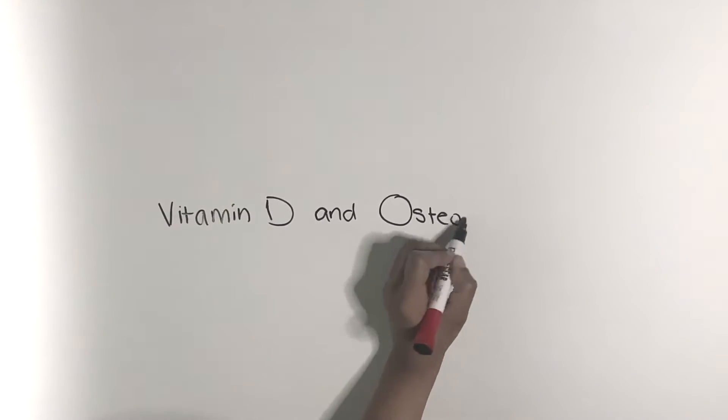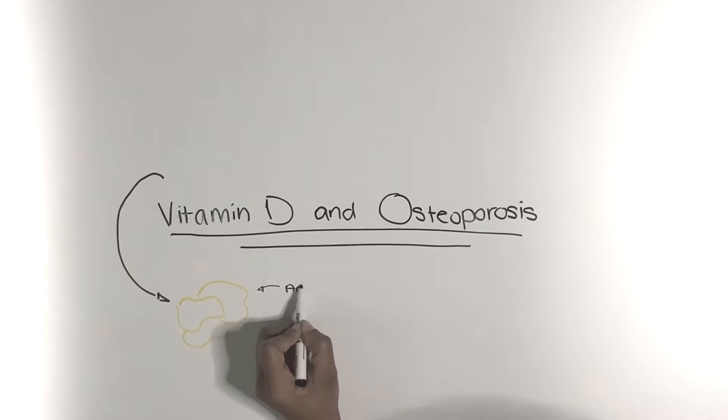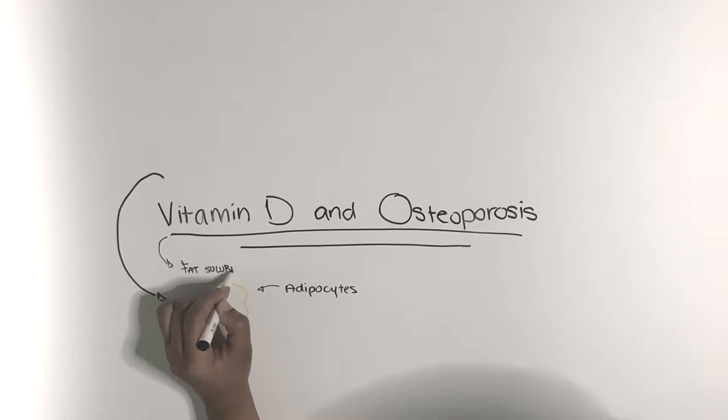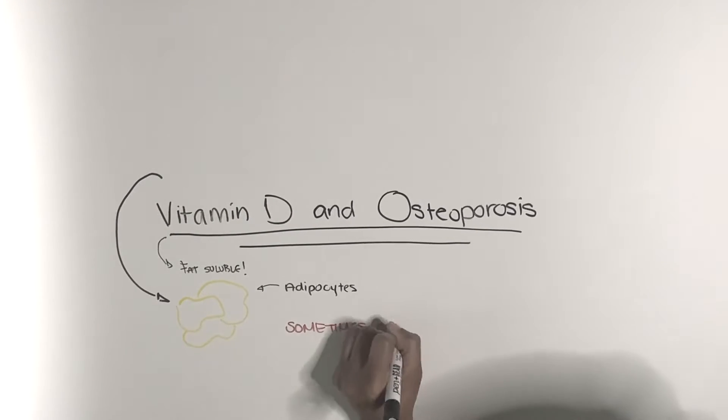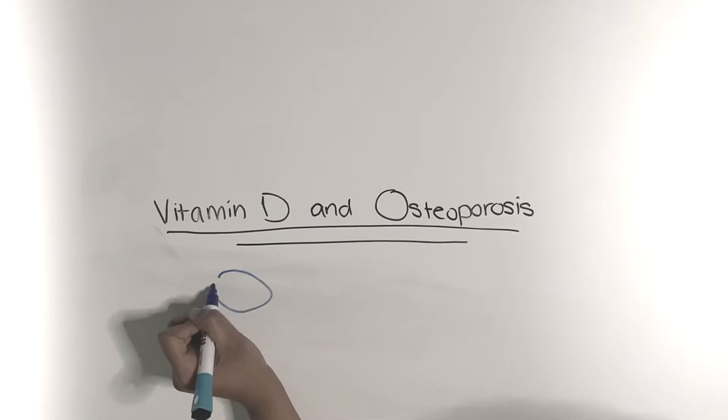Hi everyone, so today we're going to be discussing vitamin D and osteoporosis. Vitamin D is a fat-soluble vitamin stored in the adipocytes, also known as the fat cells of the body.